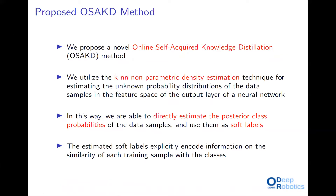In this work we propose a novel online self-acquired knowledge distillation method. To achieve this goal, we utilize the KNN non-parametric density estimation technique for estimating the unknown probability distributions of the data samples in the feature space of the output layer of a neural network. In this way, we are able to directly estimate the posterior class probabilities of the data samples and use them as soft labels. The estimated soft labels explicitly encode information on the similarity of each training sample with the classes, and as training progresses we expect to learn more reliable and meaningful soft labels, since they are driven by the supervised loss.